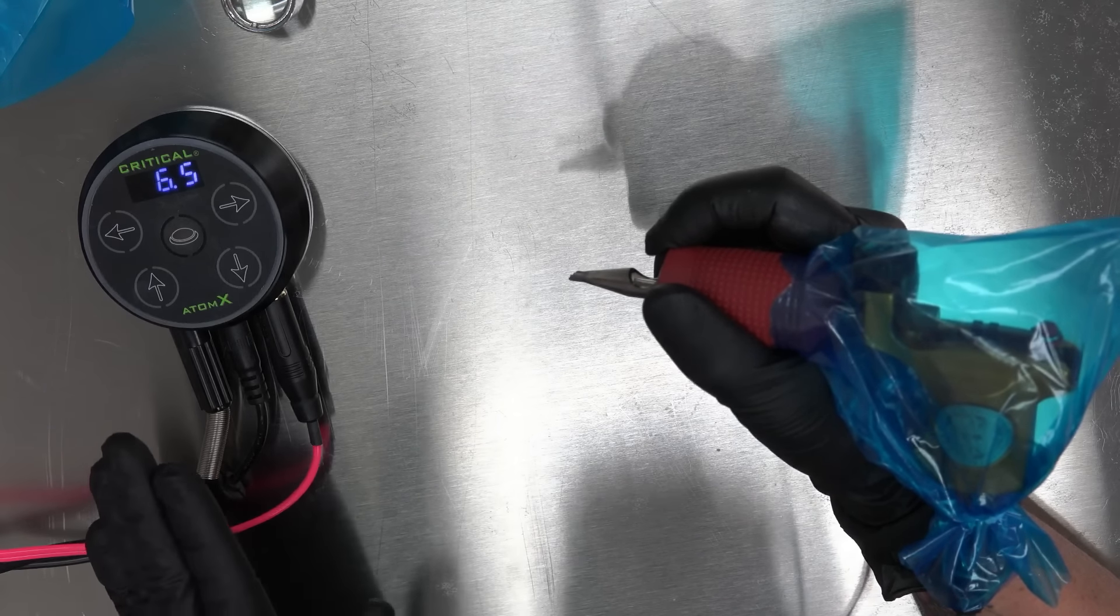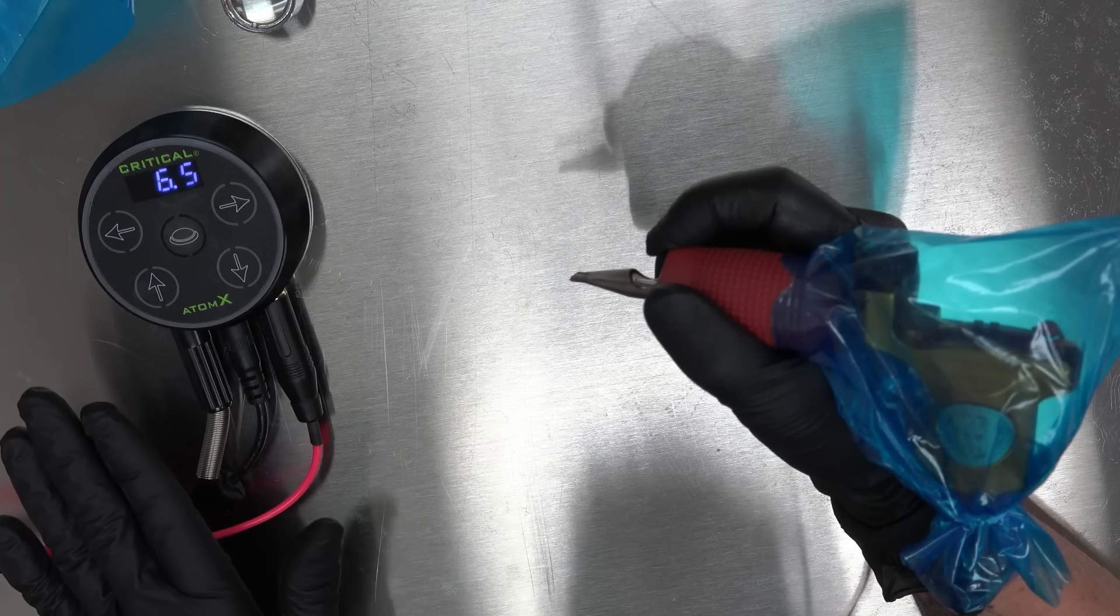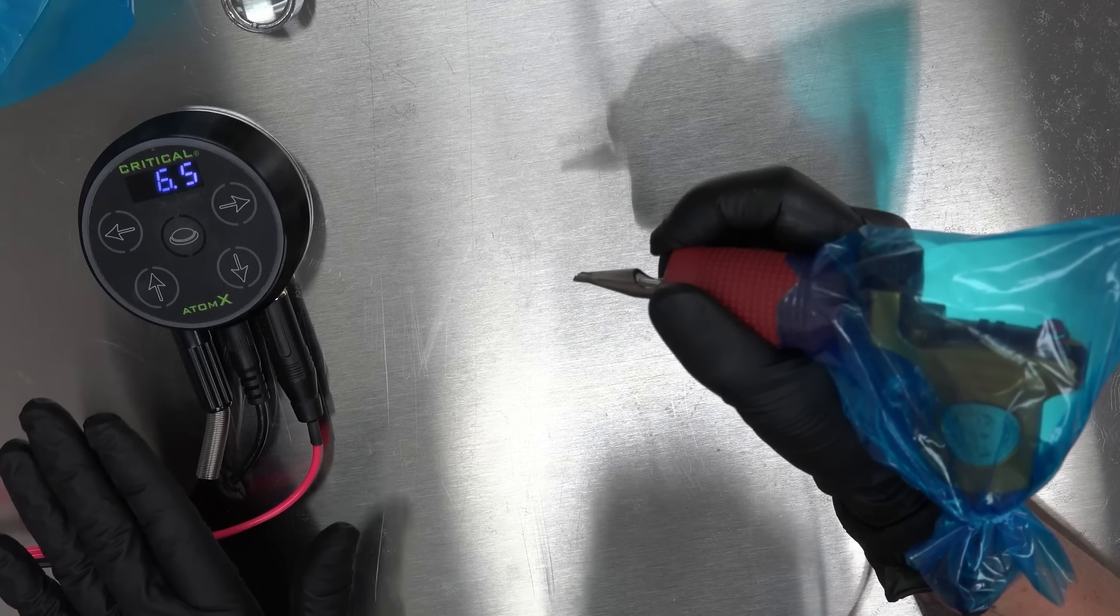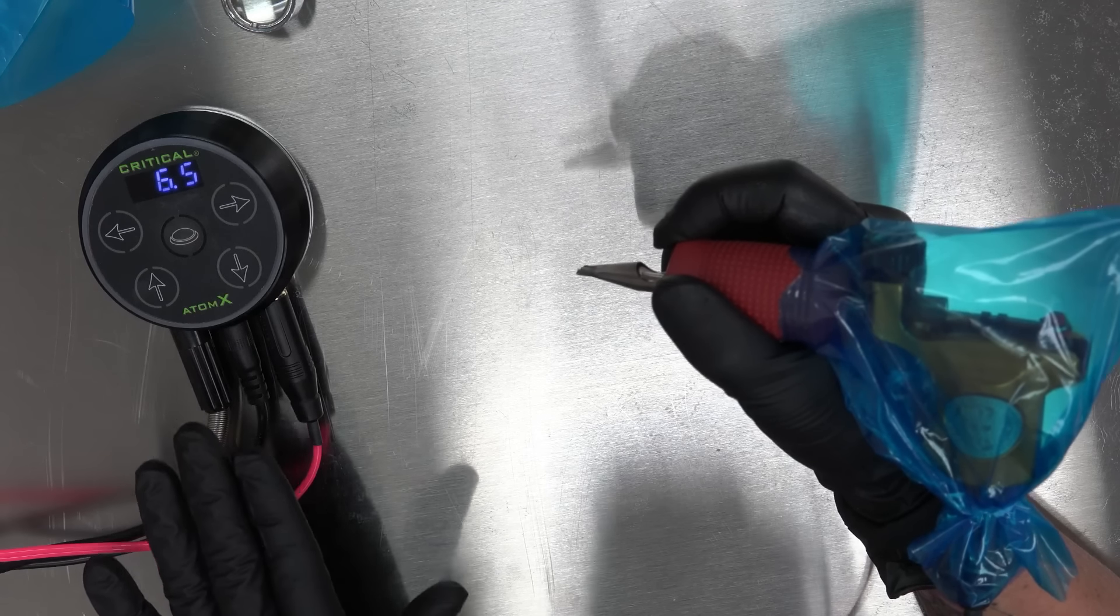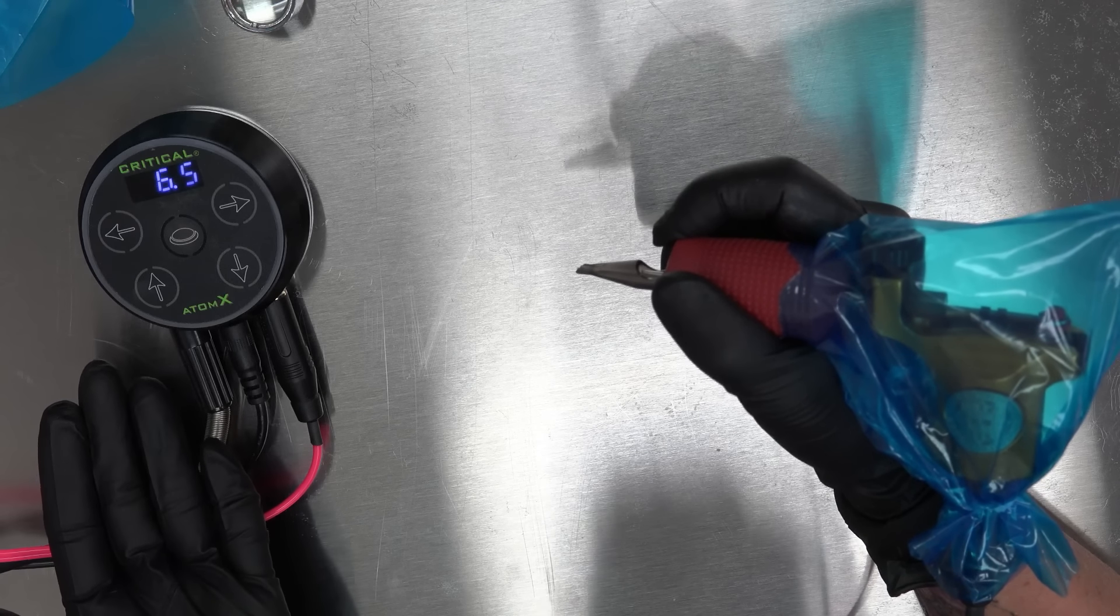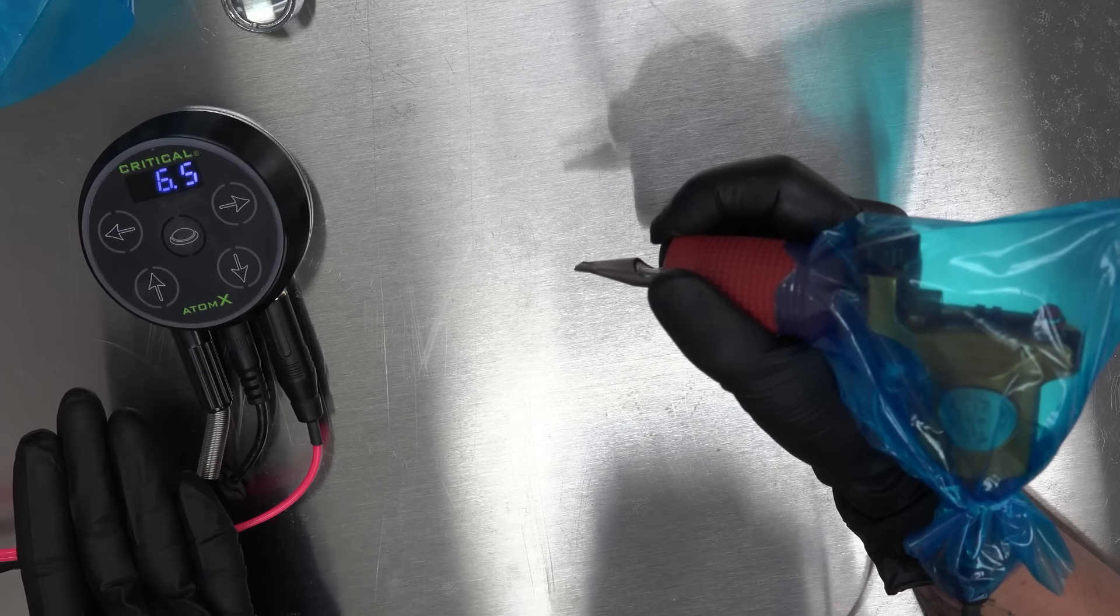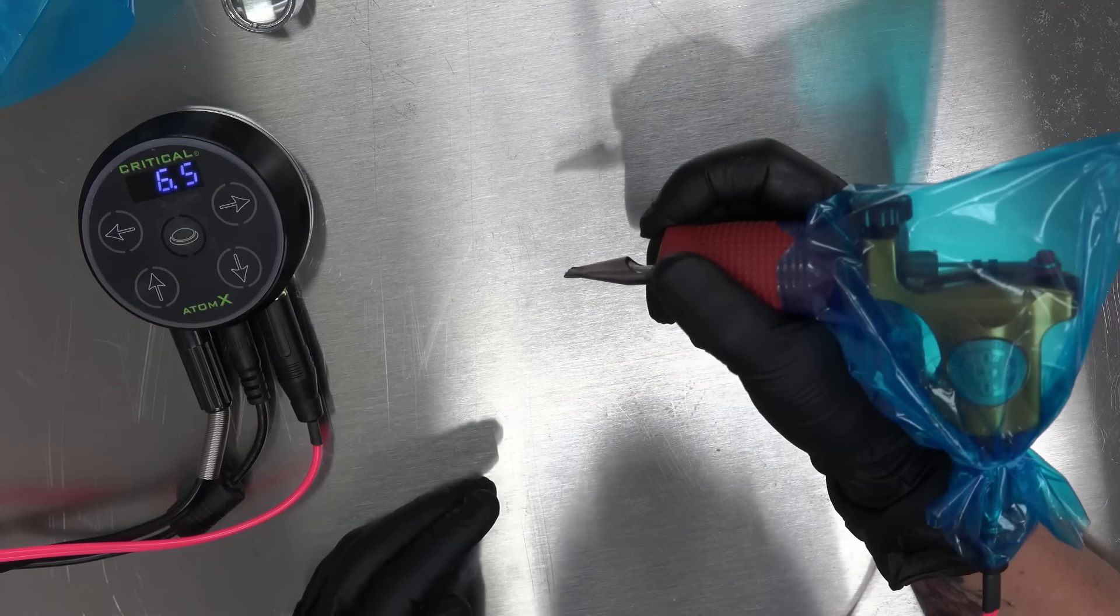And the smaller the needle. The lower the number. So singles. Three liners. Small needles. The lower the number. Bigger needles. Like eight shaders. Eleven mags. That takes a little bit more oomph power. To run that needle. So your numbers will go up a little bit.